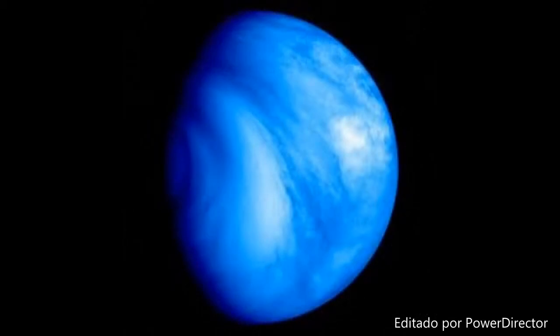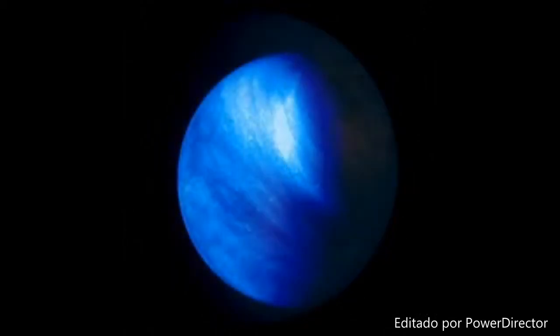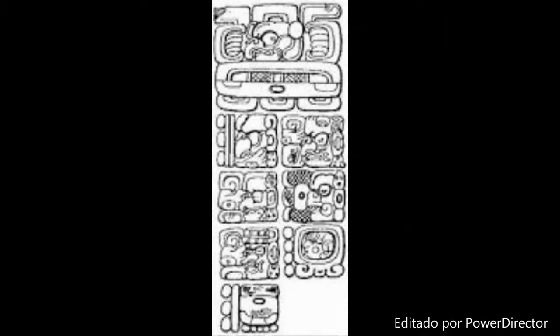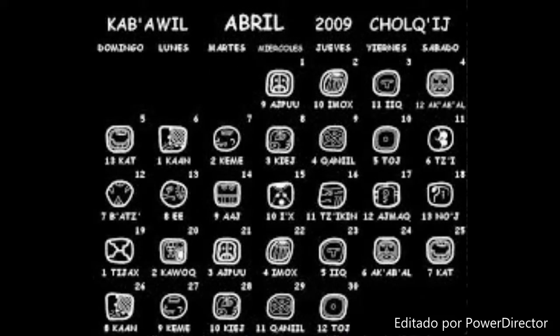Estrella se dice en maya «ek» y es también el apellido de muchas personas de esta región. Los calendarios mayas, Tzolk'in, Haab y Baktún, fueron uno de los mayores logros culturales de esta civilización, y muchos de los acontecimientos estelares se encontraban registrados en ellos.